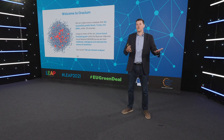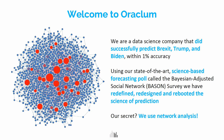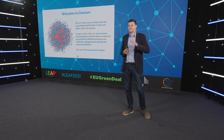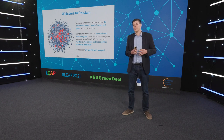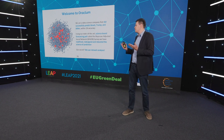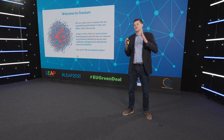So I'm the CEO of Oracle, and we're a company — we're kind of branding ourselves as a data science company. We managed to successfully make a few predictions, specifically election predictions: Brexit, Trump, Biden, et cetera, and we did it with incredible accuracy. So the way we typically do this is we use what we call a science-based forecasting poll.